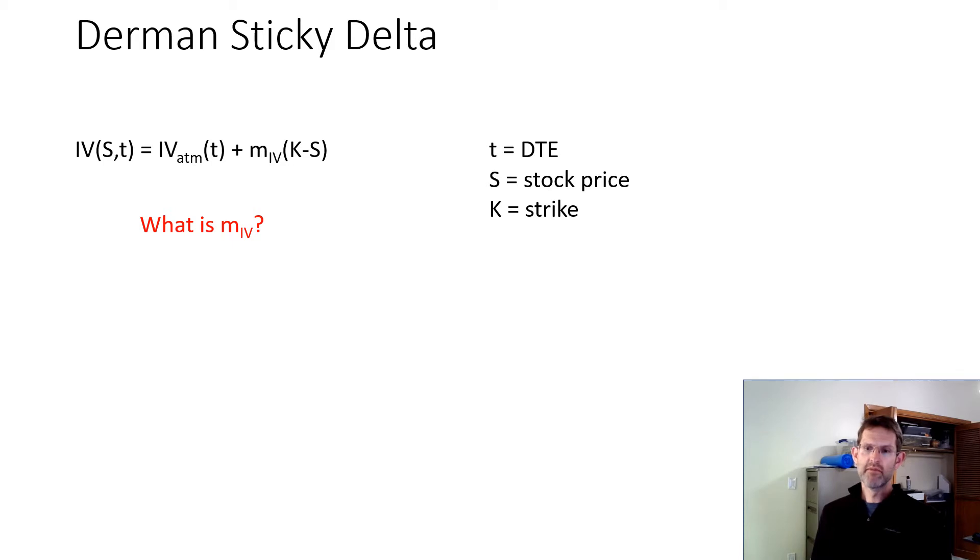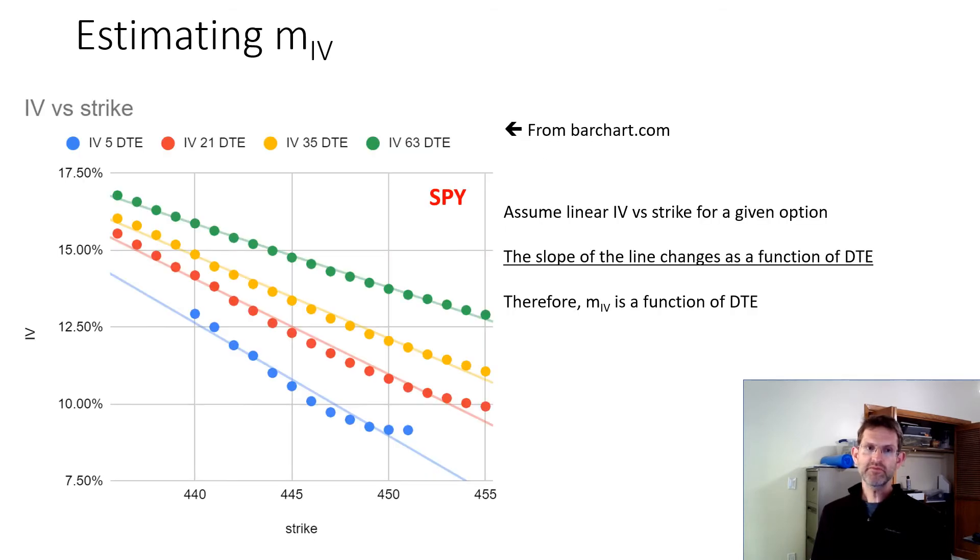So what is m_IV? In this case, I literally cut and pasted four options chains for the SPY from Barchart.com, and you can use whatever, Yahoo Finance, whatever you want to use, into my Google spreadsheet.